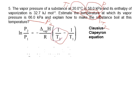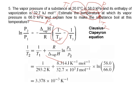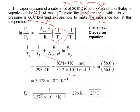We modify the equation to solve for 1/T2: 1/T2 equals 1/T1 plus R over delta H. Here delta H is the enthalpy of vaporization, 32.7 kilojoule per mole — you need to convert to joules by multiplying by 1000. Calculating 1/T2 and then T2 gives approximately 296 kelvin, or 23 degrees Celsius.